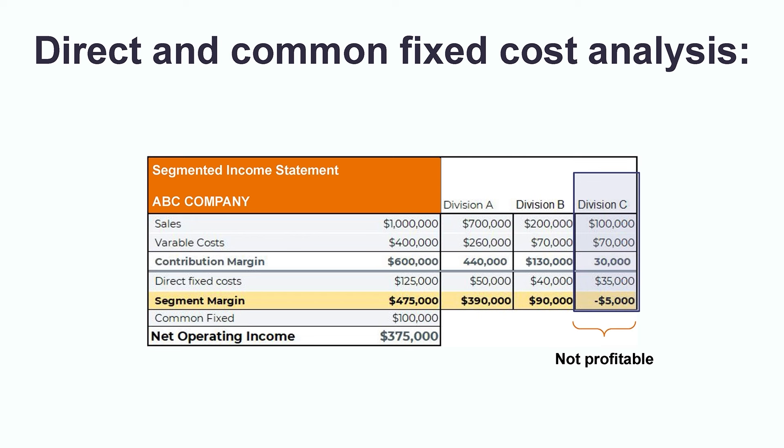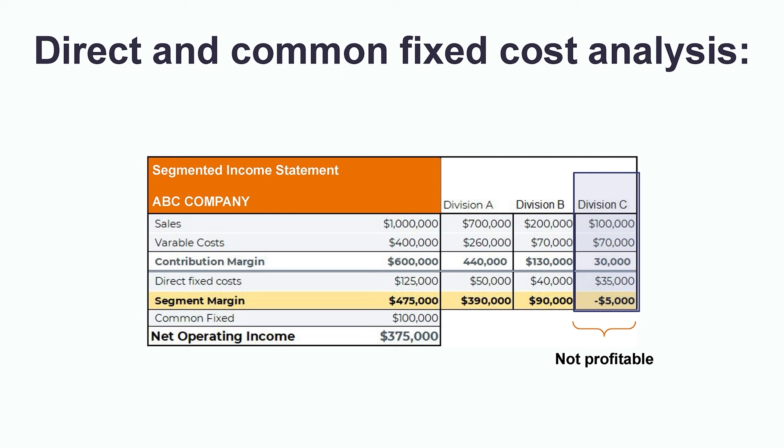However, if we look at Division C, we can clearly see that the division is not profitable based on the negative $5,000 segment margin. Producing this segmented income statement has given management insight into which division is underperforming and tells them that they likely need to focus their efforts on Division C in order to improve their overall performance going forward.